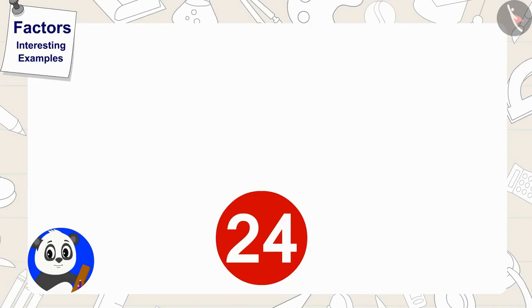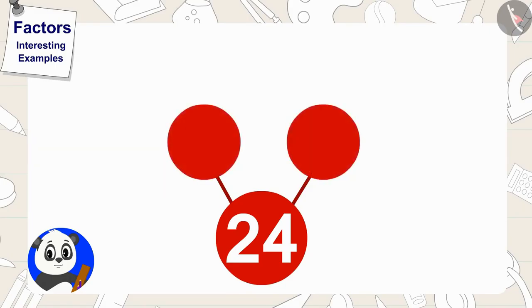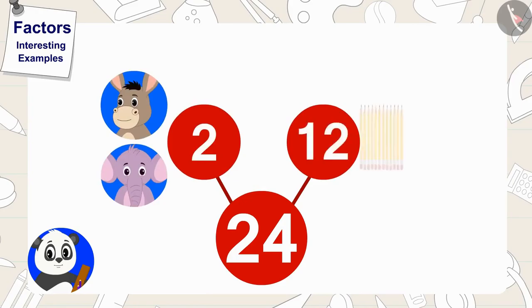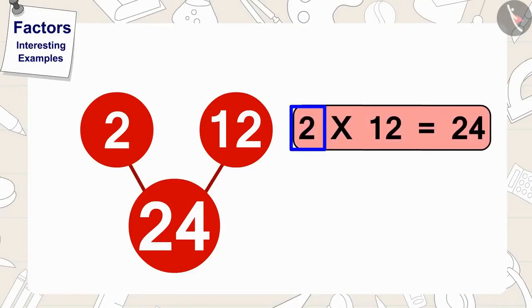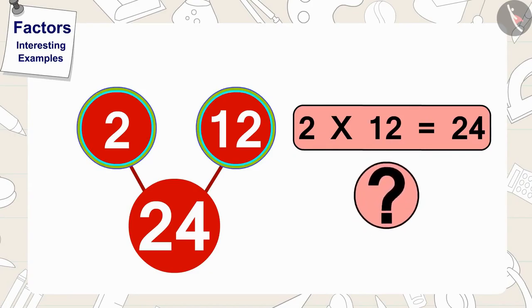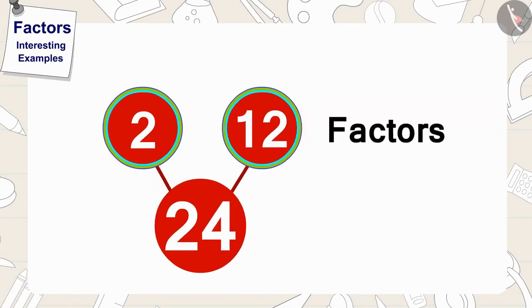Then, he made two lines on the outside of the circle in this way and two circles on the other end of it. In these circles, he wrote down the numbers 2 and 12. Children, because 2 times 12 is 24, so 2 and 12 are what of 24? Exactly, the factors.